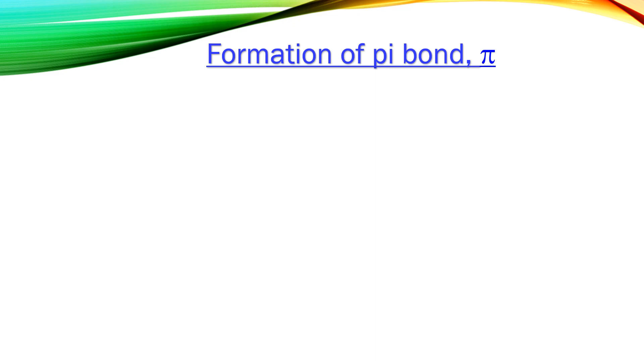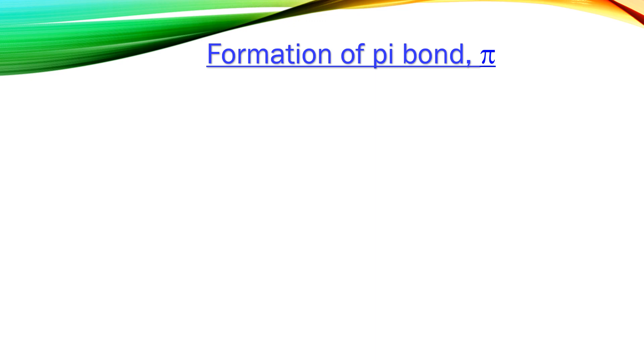Next, we will look at the formation of pi bonds. A pi bond is a weak covalent bond. It is formed by side-wise or lateral overlapping of two p-orbitals.